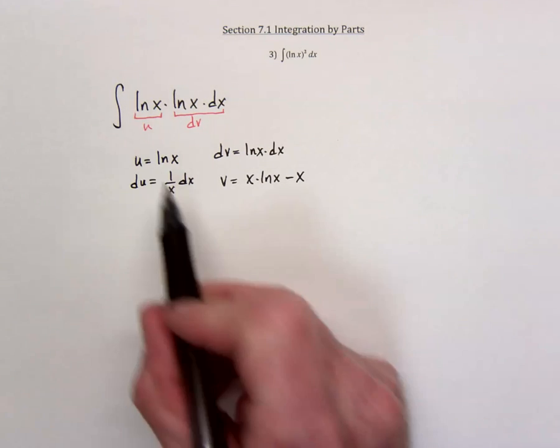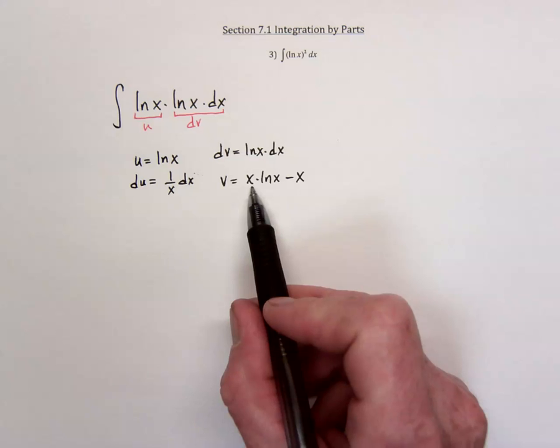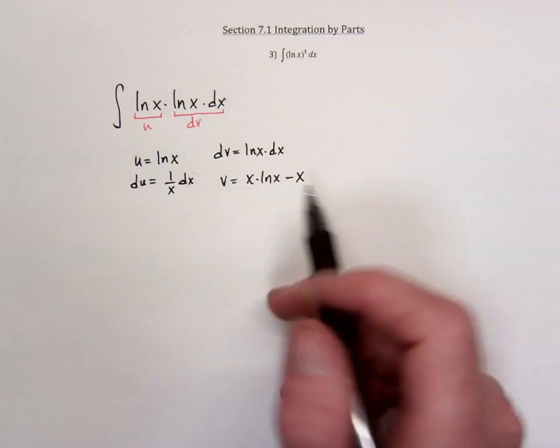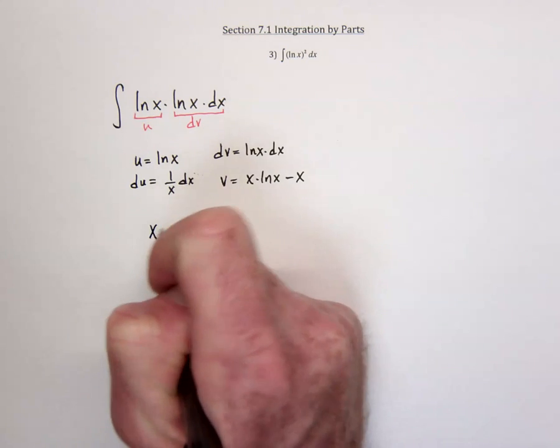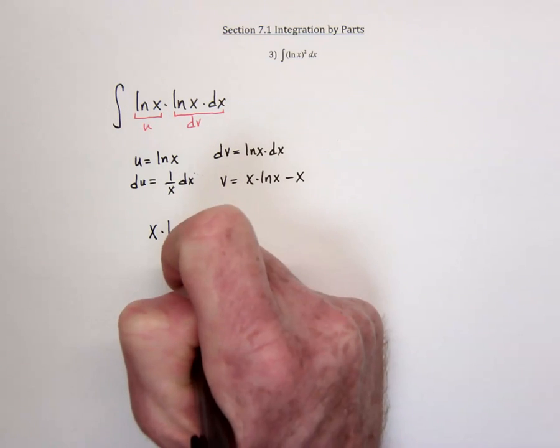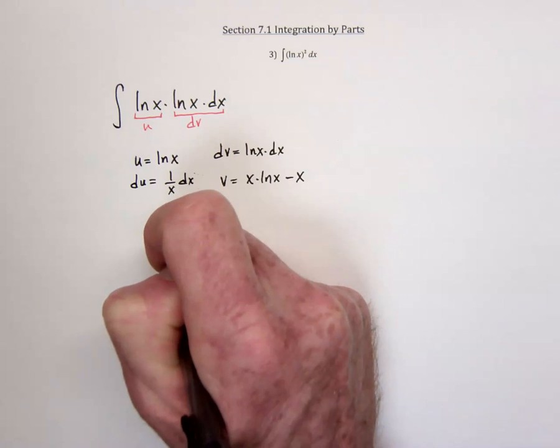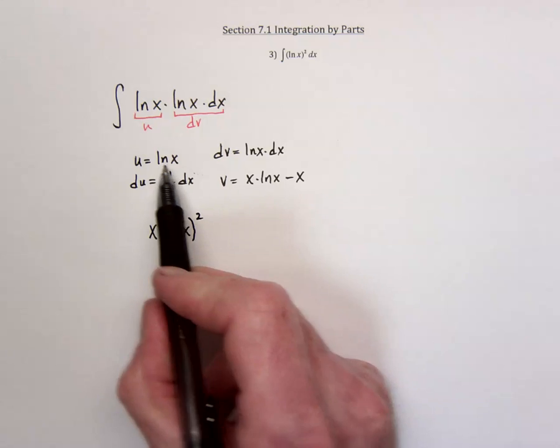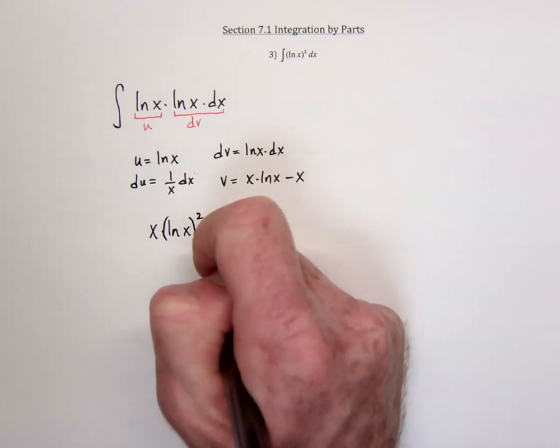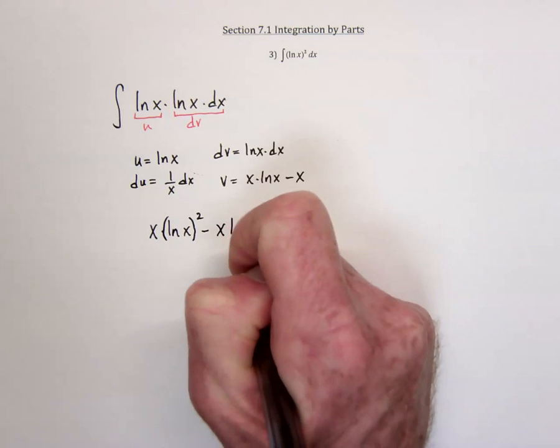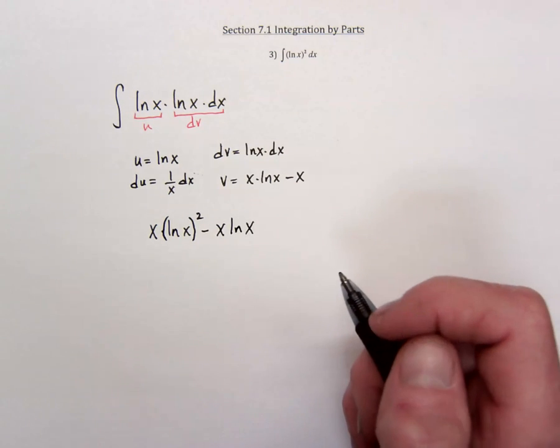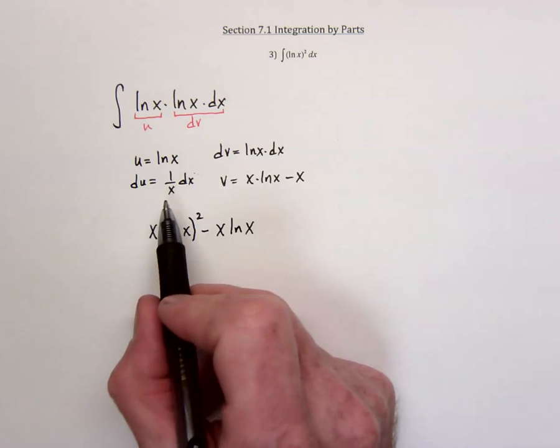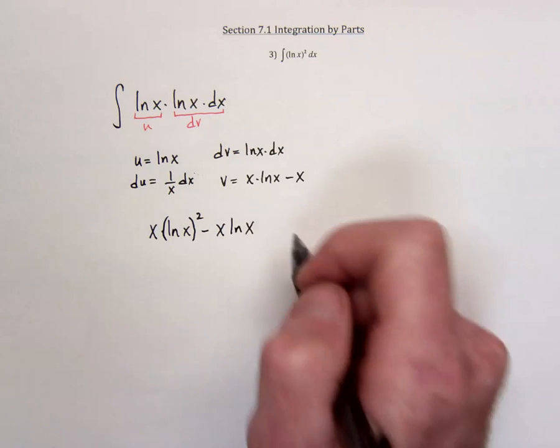So integration by parts says it's going to be the u times the v. So that means it's going to be an x times natural log and natural log. So we'll get an x and then natural log of x times natural log of x, which means it's squared. Distribute this over here and we've got minus an x in a single natural log of x.